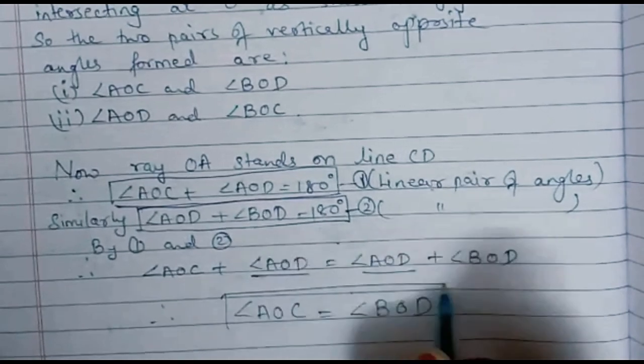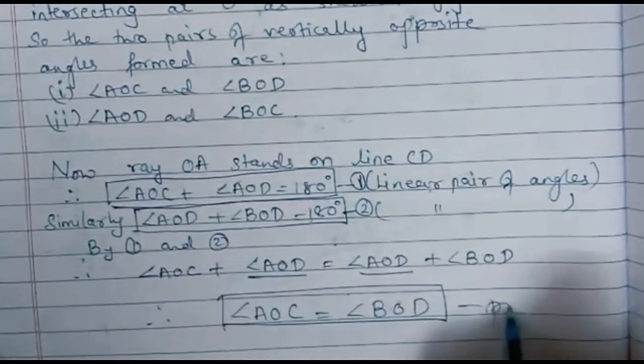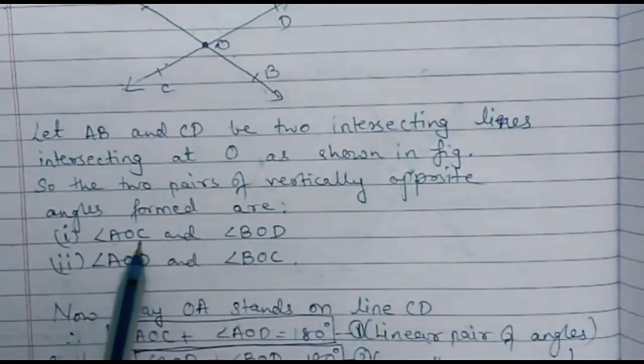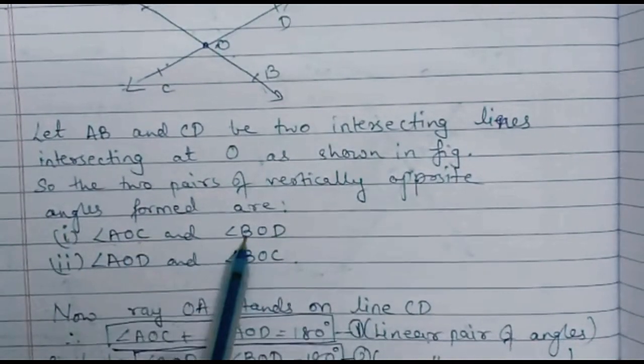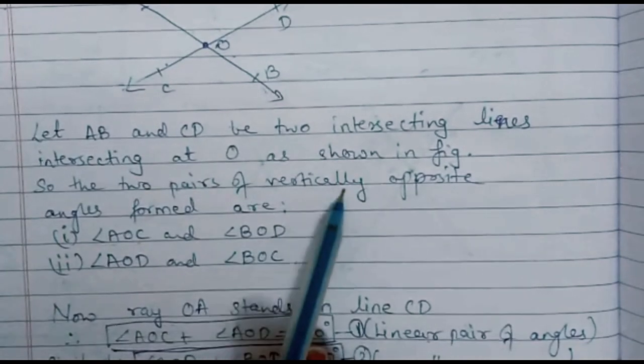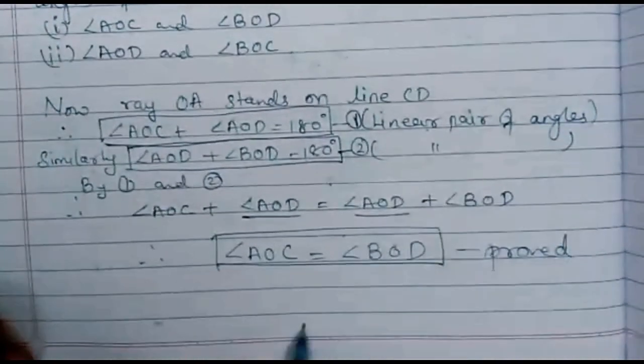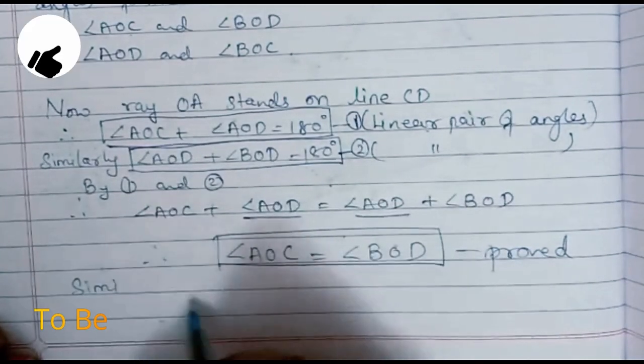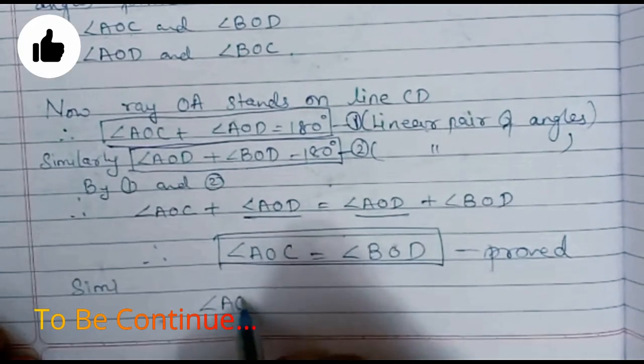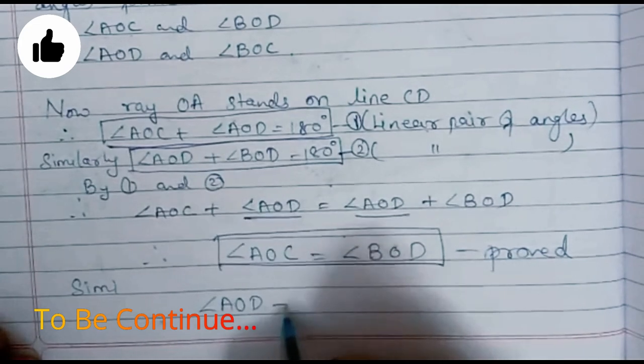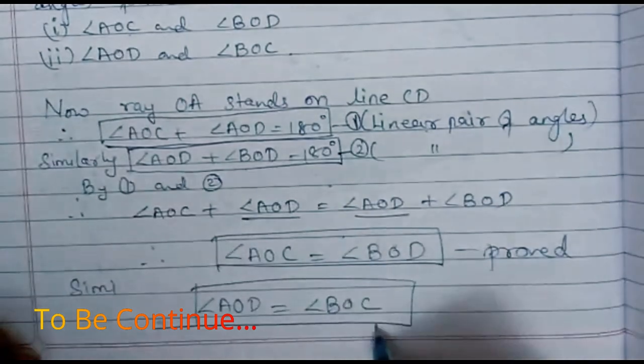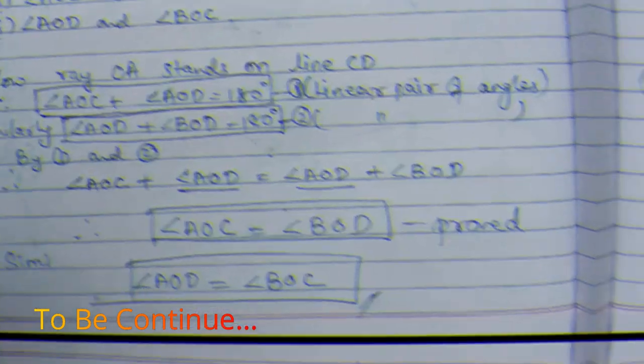So we have proved that the first pair of vertically opposite angles, if you remember this was the first result, angle AOC and angle BOD were the vertically opposite angles and here we have proved that they are equal. So you can write similarly we can also prove angle AOD is equal to angle BOC. Okay, so hence this is the proof of theorem number 6.1.